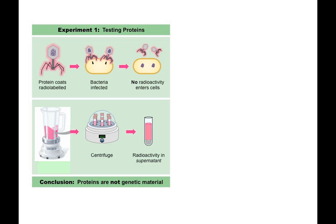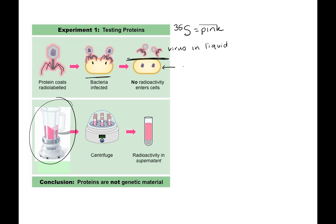In experiment one, they tested proteins using S35. They grew the phage in S35 liquid so the proteins became radioactive, then mixed those radioactive phage with bacteria. The phage injected their genetic material. Then they put the mixture in a blender to knock the phage off and spun them in a centrifuge — heavy cells go to the bottom, light viruses stay in the liquid.